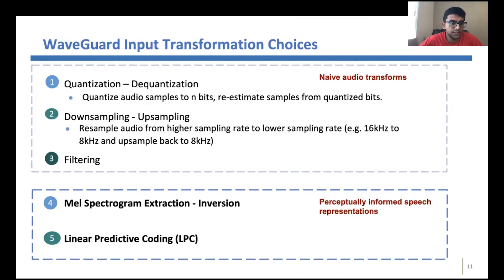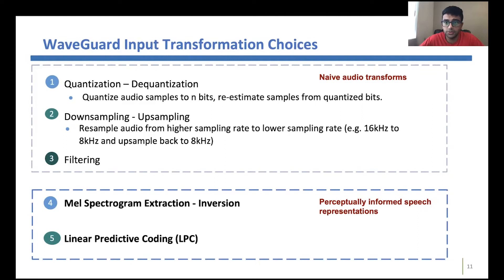We also studied two transformation functions which use perceptually informed representations. The idea is that if you compress audio to a perceptually informed representation, it should be harder for adversarial noise to be embedded in it while remaining imperceptible.